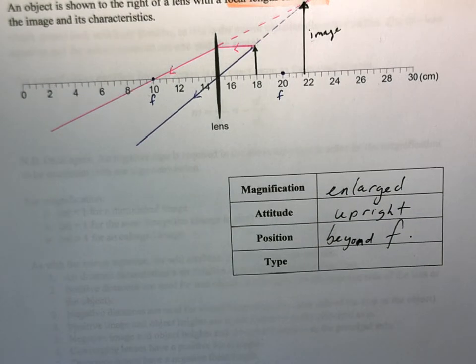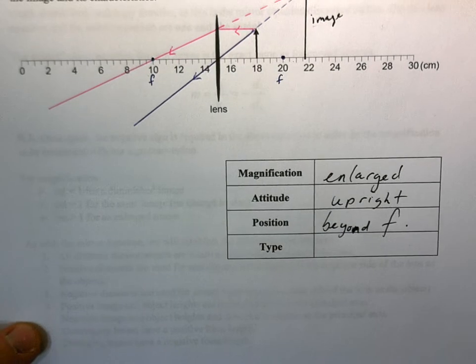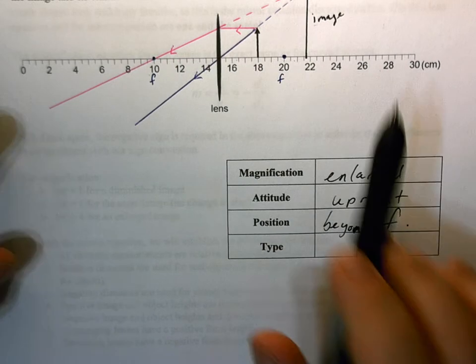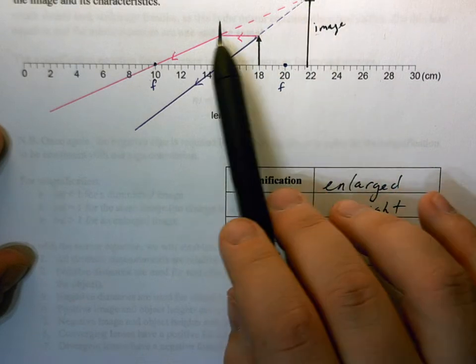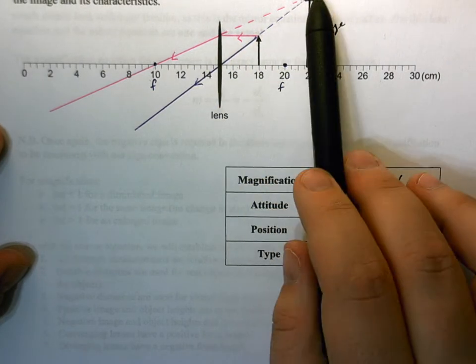For the type, this time the image is on the same side of the object as the lens, and we see this extension of the refracted rays - these virtual rays that are converging. So this is going to be a virtual image.